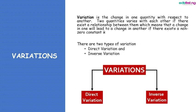Now we move to variation. Variation is the change in one quantity with respect to another. Like proportion, variation deals with two sets of quantities. Two quantities vary with each other if there exists a relationship between them — a change in one, positive or negative, will lead to a change in the other, and this requires a non-zero constant k.